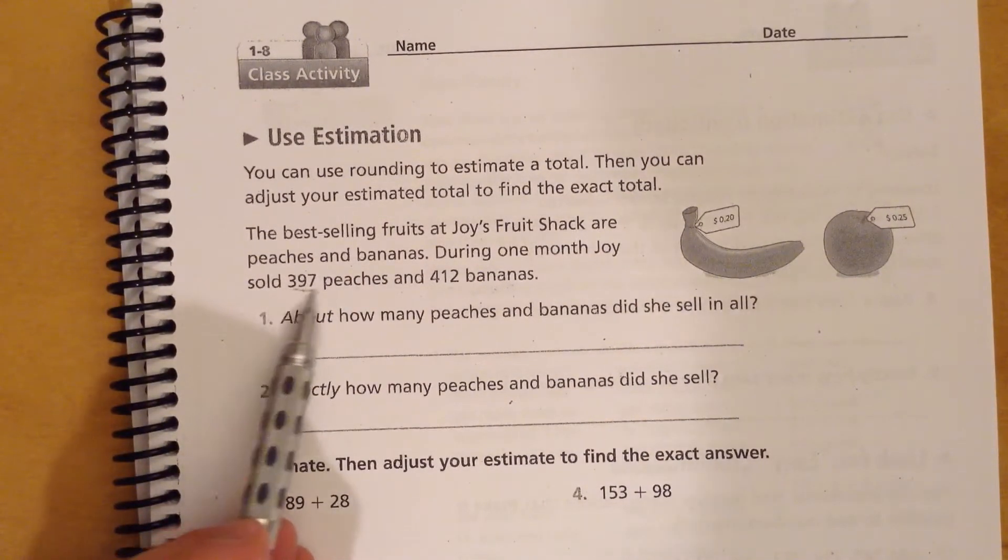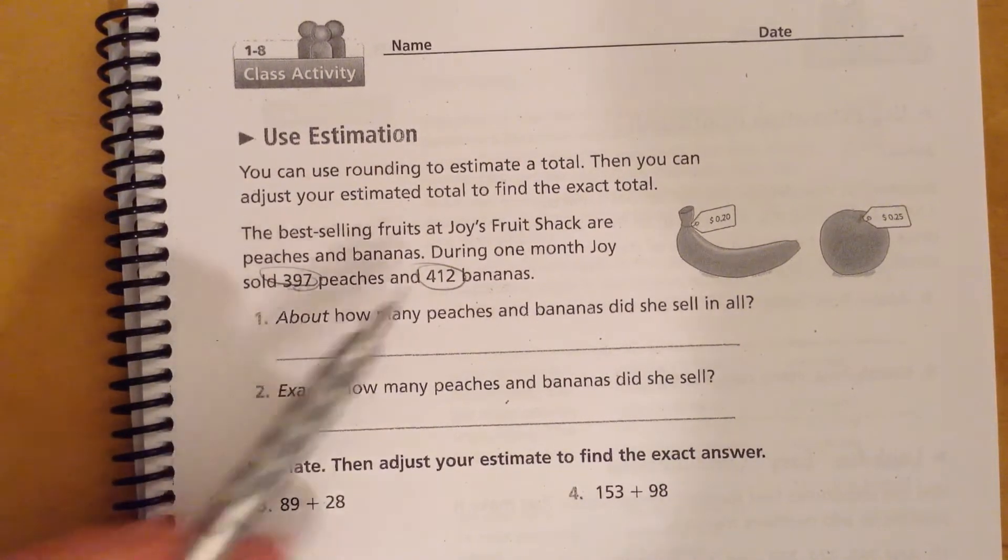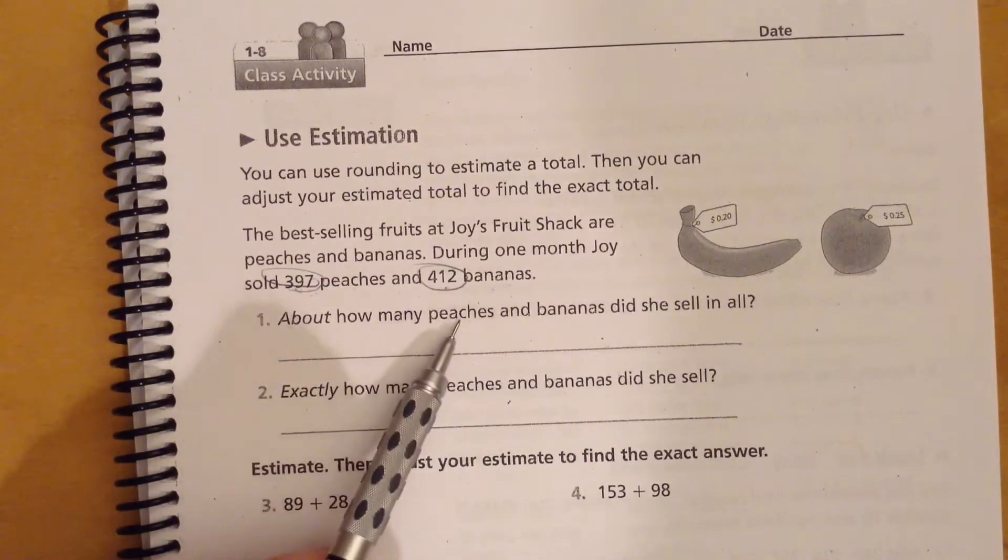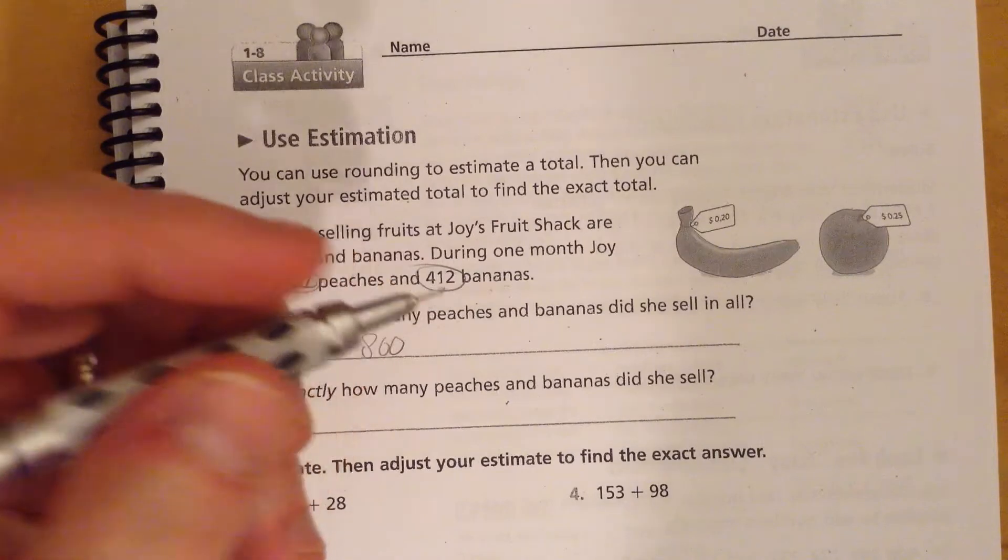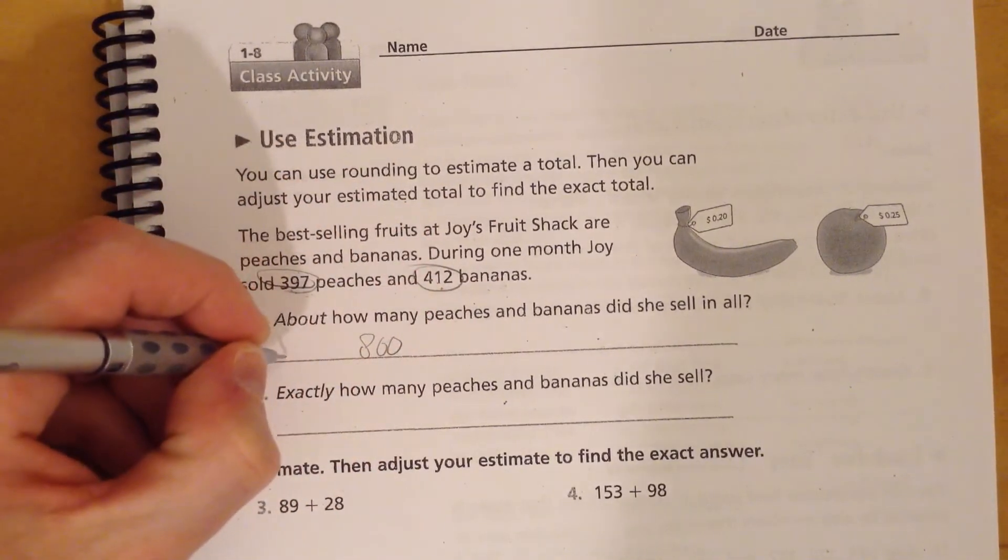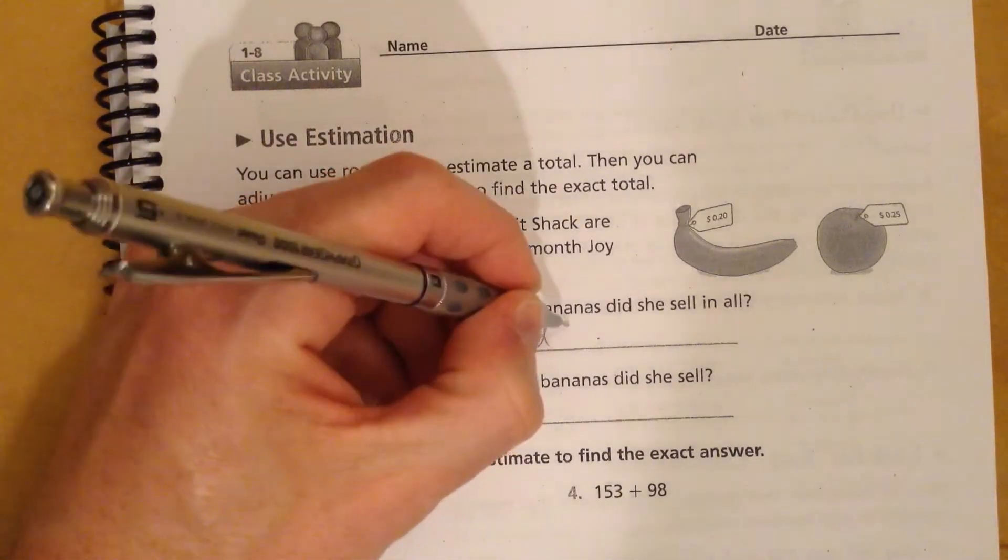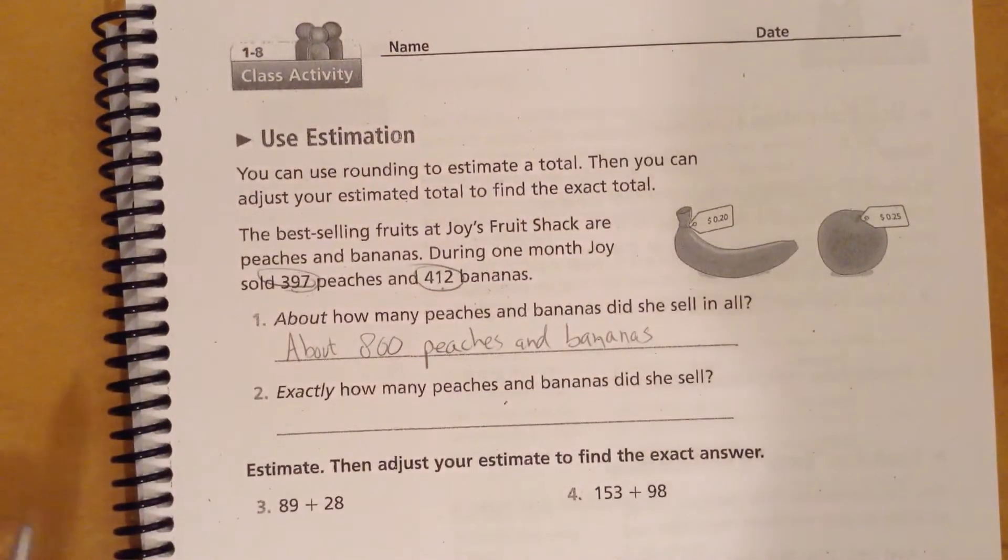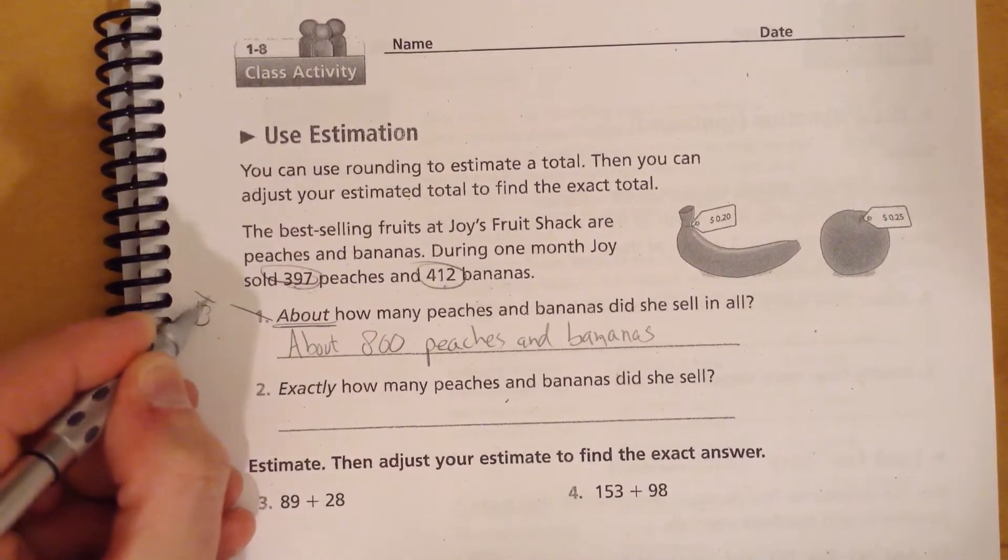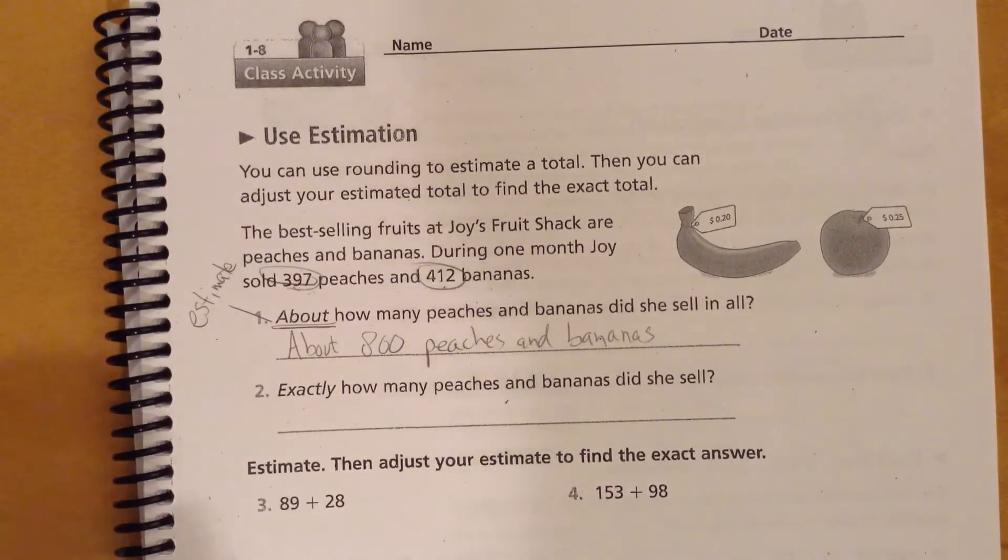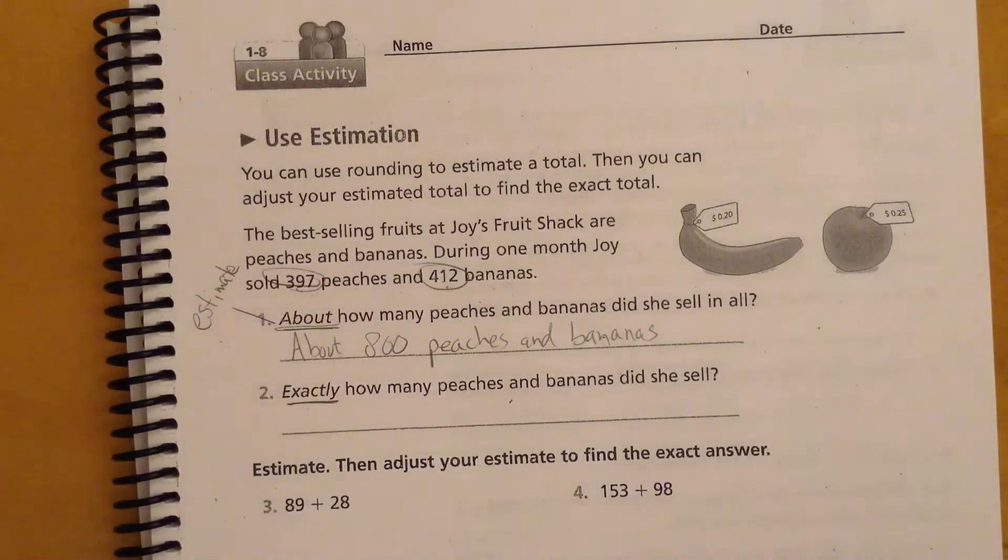So we see this. So we have our 397 and our 412. So really similar to the problem that we just did, right? So this is really close to 400. This is really close to 400. So we're looking for peaches and bananas total. So we go 400 plus 400 equals 800 peaches and bananas. And something that we should probably get in the habit of is saying about 800 peaches and bananas. Now, once again, it's asking us about, and when you see the word about, it means you are supposed to estimate, okay? When it says exactly, that means you add the actual numbers because it's looking for the exact number, not kind of close to the right number.